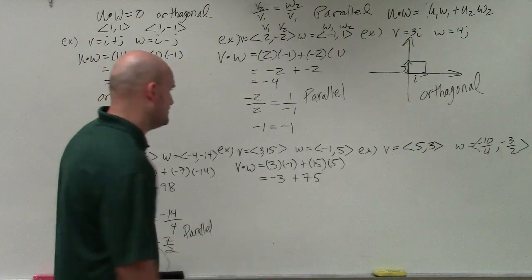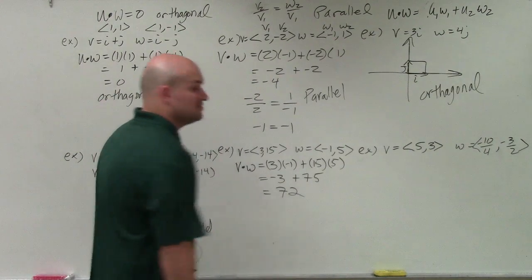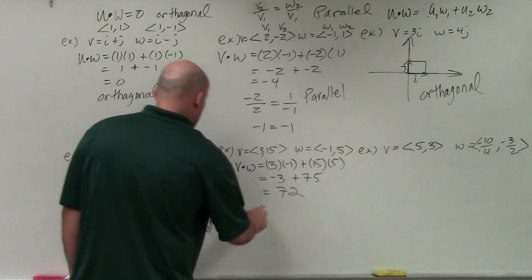So that's negative 3. That's 5 times 5, so that's 50. That's equal to 75. So that's equal to 72. So it's not orthogonal, it's not even close.